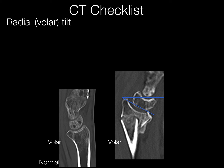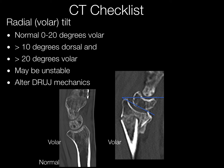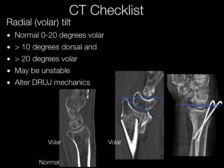Radial or volar tilt can be determined using the sagittal plane. The normal situation is where the distal radius has a volar tilt — normally 0 degrees to about 20 degrees towards the volar. If it's greater than 10 degrees dorsal or greater than 20 degrees volar, that can be unstable and alter distal radial ulnar joint mechanics. Here is the example of the fracture fixed.